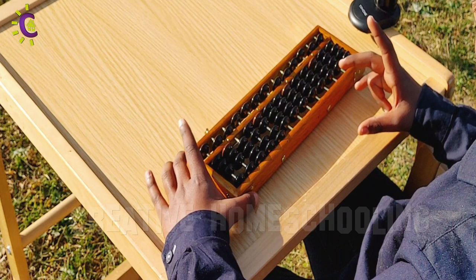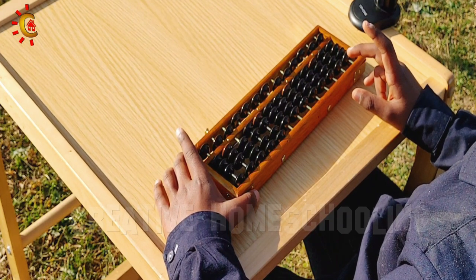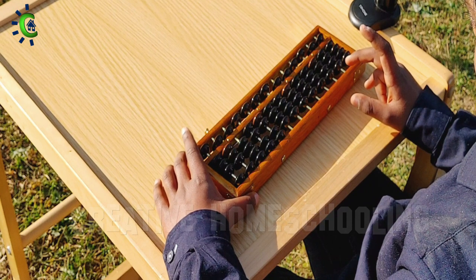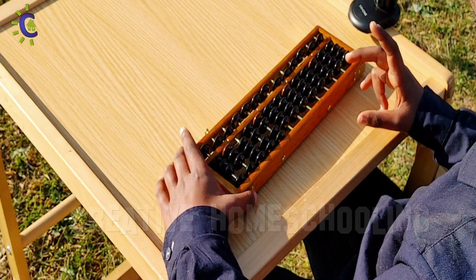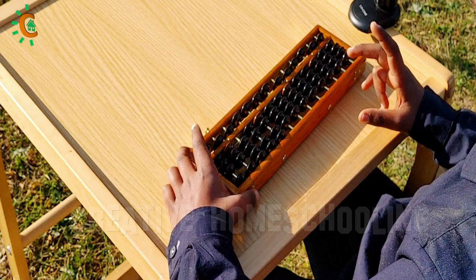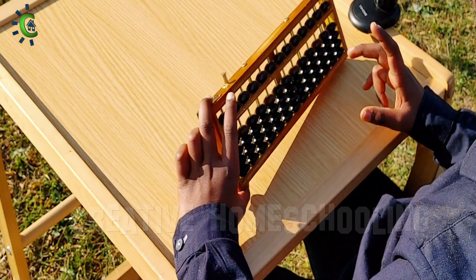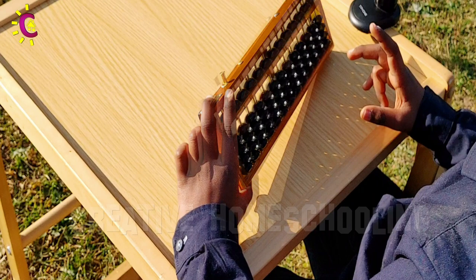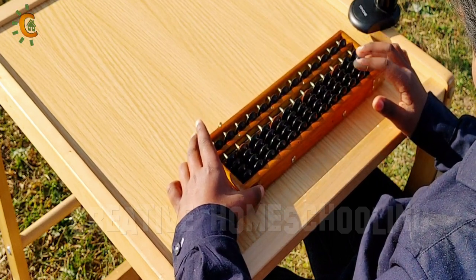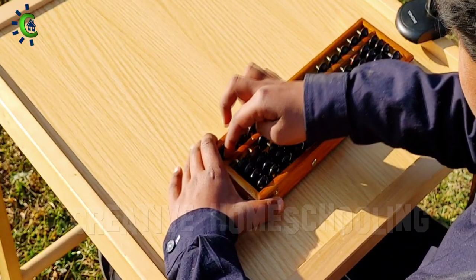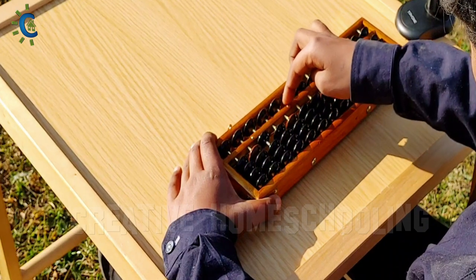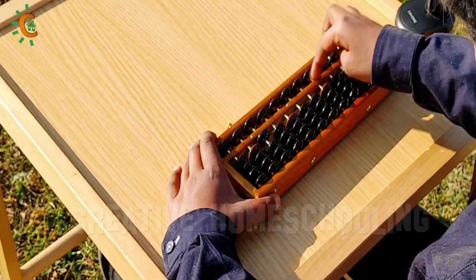In clearing the abacus for use, hold the left end with your left middle finger on its upper edge and your left thumb on its lower edge and move all the beads down by slanting the upper edge towards your body. After leveling the abacus, raise all five unit beads by moving the right index finger from left to right along the upper edge of the beam.